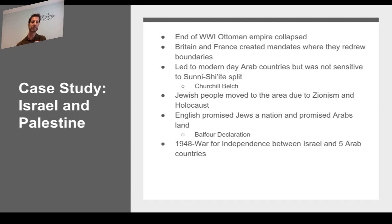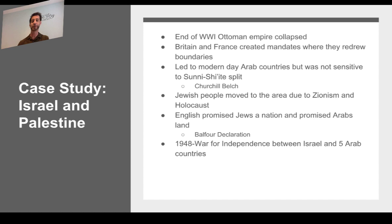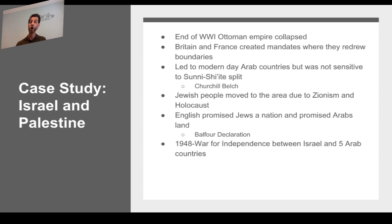Eventually the English left, and in 1948 the Jewish people declared a nation — the size of half of New Jersey — in what is today Israel. But Arab families had been living on that land for centuries under the Ottoman Empire. Five Arab countries went to war against Israel; Israel won and doubled the size of its land, roughly to the size of New Jersey as we see it today. The context here is European imperialism, the desire for oil, and the insensitivity of drawing boundaries without thinking about long-term effects.